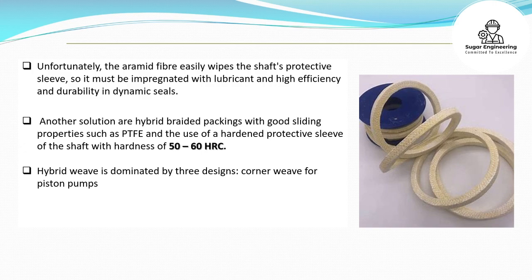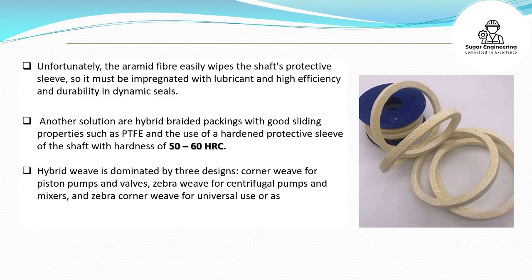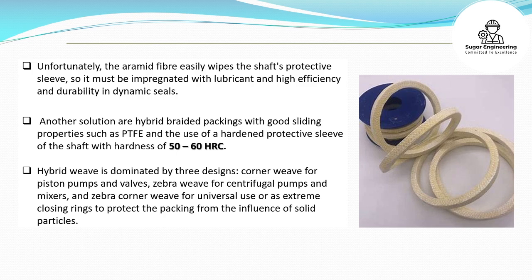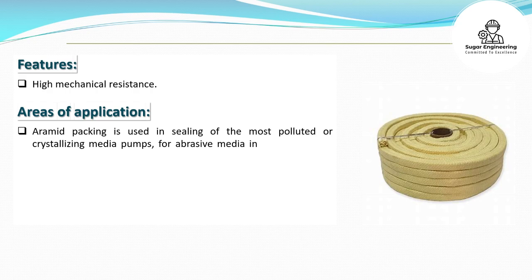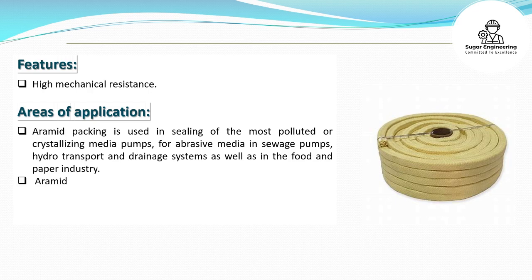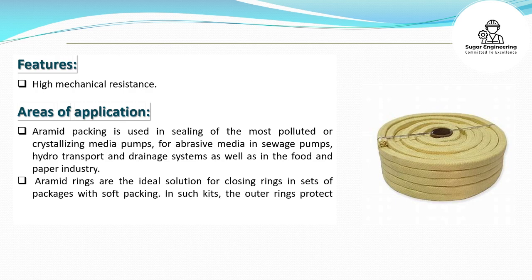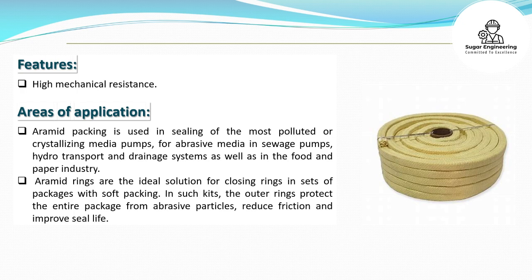Hybrid weave is dominated by three designs: corner weave for piston pumps and valves, zebra weave for centrifugal pumps and mixers, and zebra corner weave for universal use or as extreme closing rings to protect the packing from the influence of solid particles. Features: high mechanical resistance. Areas of application: ermid packing is used in sealing of the most polluted or crystallizing media, pumps for abrasive media, sewage pumps, hydro transport and drainage systems, as well as in the food and paper industry. Ermid rings are the ideal solution for closing rings in sets of packages with soft packing, where the outer rings protect the entire package from abrasive particles, reduce friction and improve seal life.